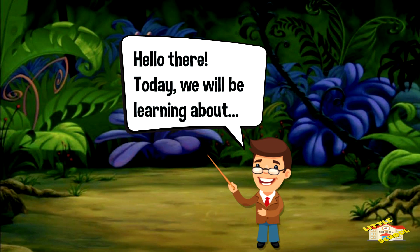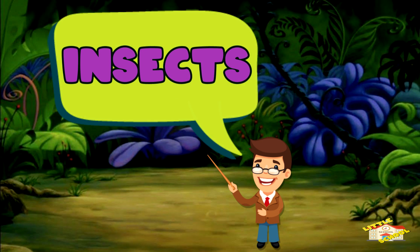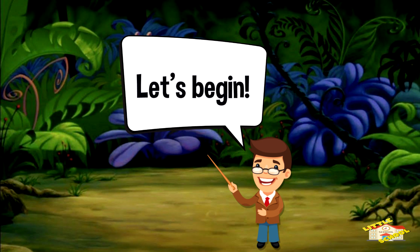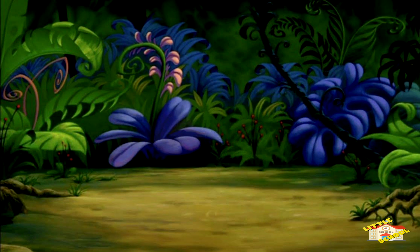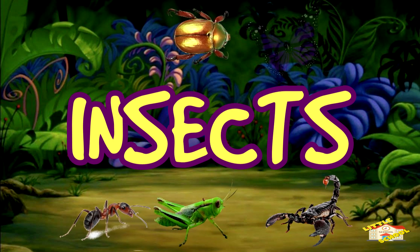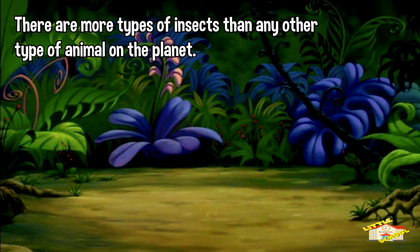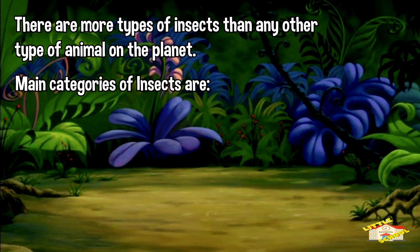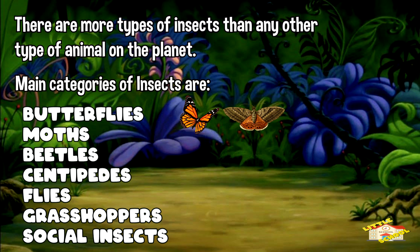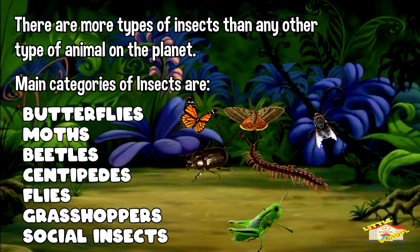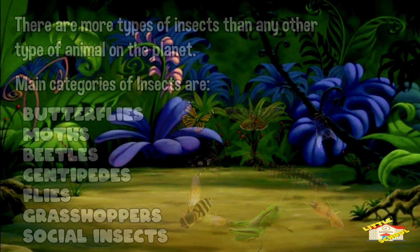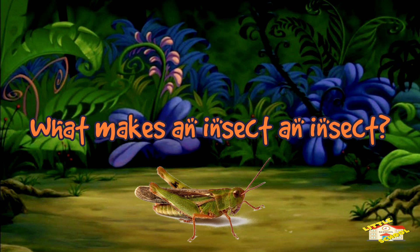Hello there! Today we'll be learning about insects. Let's begin. There are more types of insects than any other type of animal on the planet. The main categories of insects are butterflies, moths, beetles, centipedes, flies, grasshoppers, and social insects such as bees and termites.